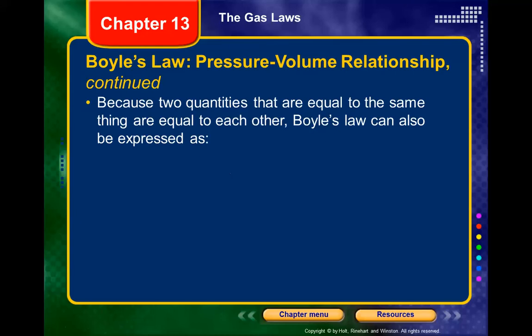When the product is constant, if we change the pressure or the volume, the product remains the same value. So if we have an initial pressure P1 and initial volume V1, that product will equal the new pressure P2 times the new volume V2.